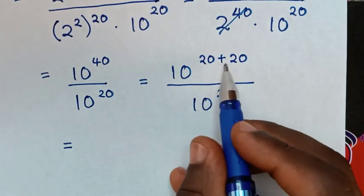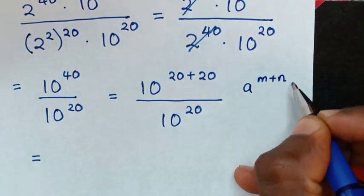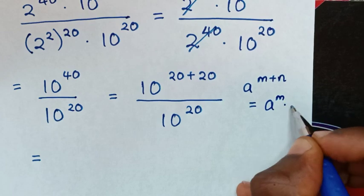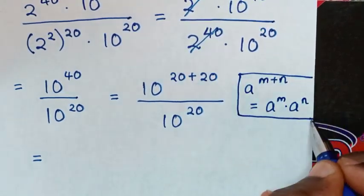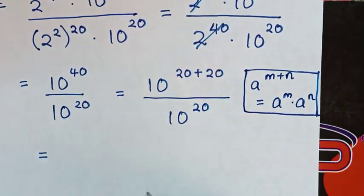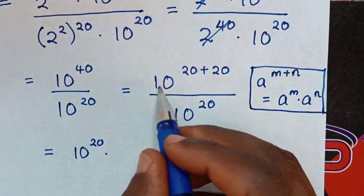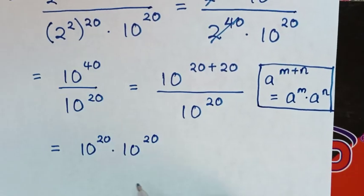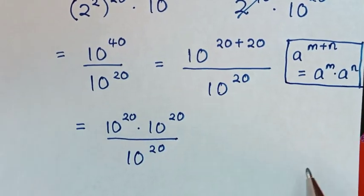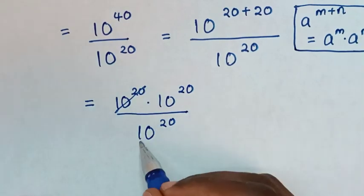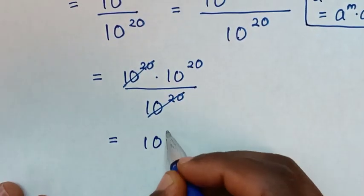10 power of 20 plus 20 is in the form of A power of M plus N, which is equal to A power of M times A power of N. So it will be 10 power of 20 times 10 power of 20, over 10 power of 20. Now to simplify, this 10 power of 20 will cancel this 10 power of 20, so it will be equal to 10 power of 20.